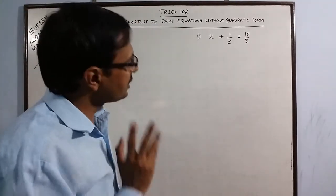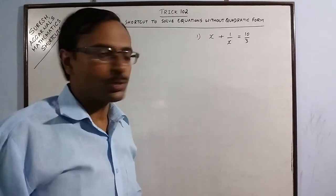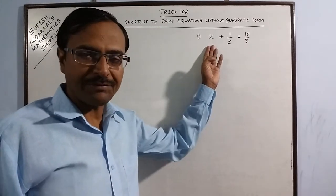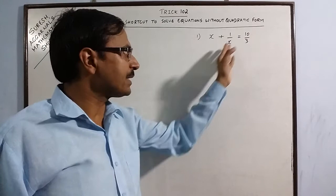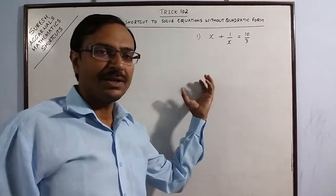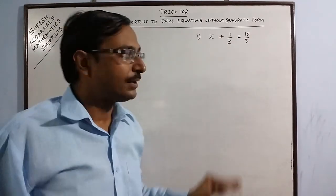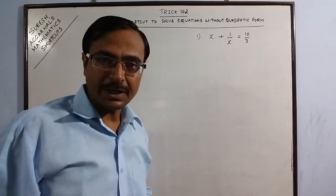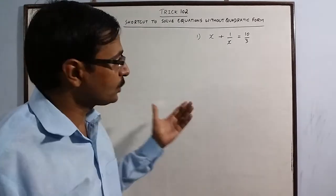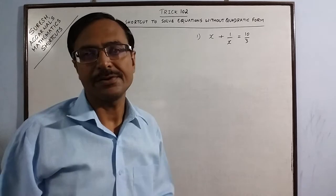So the traditional approach to this question is to take LCM in the left hand side and then to cross multiply, bring everything to the left, you will have a quadratic equation. Then solve the quadratic equation by either splitting the middle term or by using quadratic formula then get the final result.